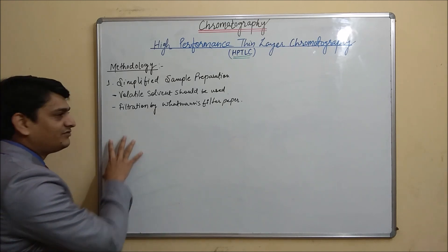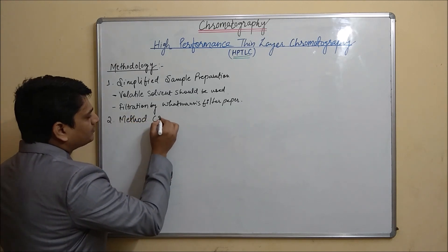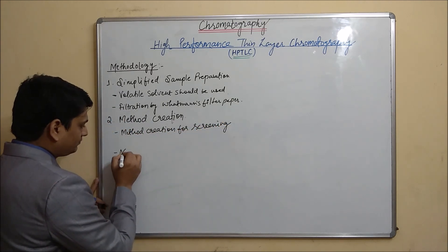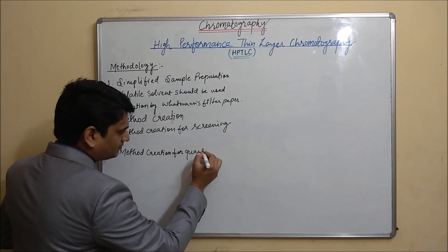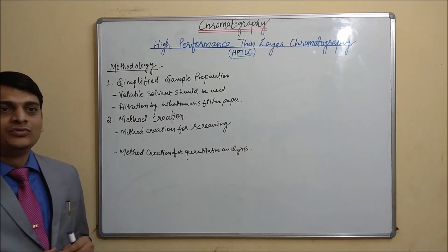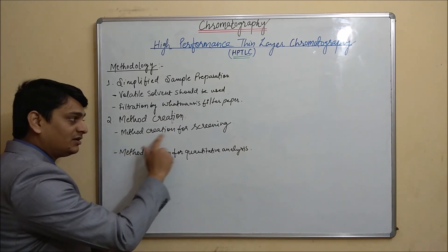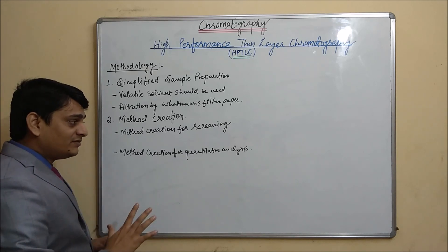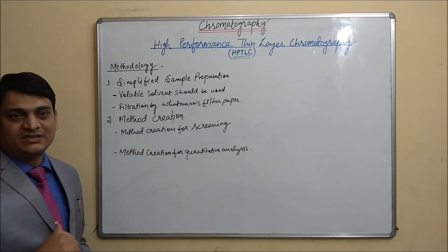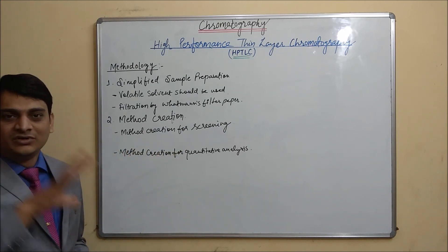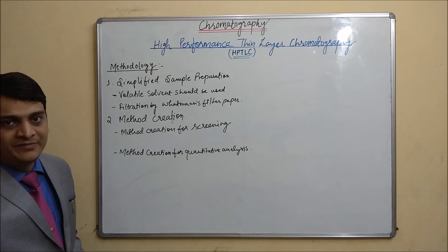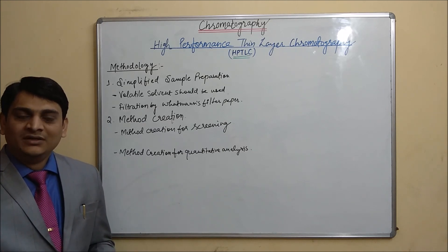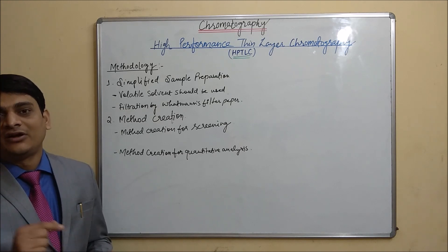The second step is method creation. There are two sections: first, we can create our method for screening or fingerprinting, and second, we can create our method for quantitative analysis. For screening or fingerprinting, we input various details of our chromatographic plate and we get the RF value, the number of spots present in the sample, and the spectra of those particular spots.